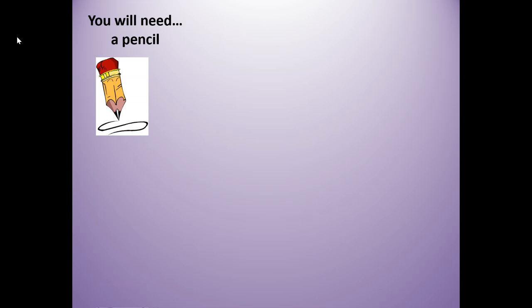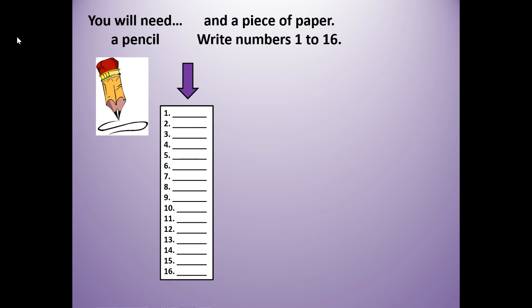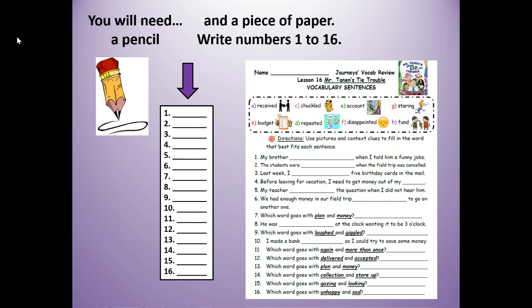For this lesson you will need a pencil and a piece of paper, and you're going to write your numbers 1 to 16. If you don't have your paper and pencil, make sure you get that. Your teacher might have given you a worksheet — if so, you can use that. It already has the numbers 1 through 16 on it, and you just need to pick the correct word that goes with each sentence. If you need to, push pause, get your materials, and when you're ready to join me, push play.